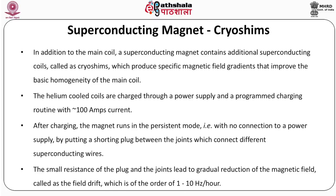In addition to the main coil cooled in liquid helium, a superconducting magnet contains additional superconducting coils called cryoshims, which produce specific magnetic field gradients that improve the basic homogeneity of the main coil. The helium-cooled coils are charged through a power supply and a programmed charging routine with approximately 100 amps current. After charging, the magnet runs in the persistent mode with no connection to a power supply. This is done by putting a shorting plug between the joints connecting different superconducting wires. The small resistance of the plug and the joints leads to a gradual reduction of the magnetic field, called field drift, which is of the order of 1 to 10 hertz per hour.